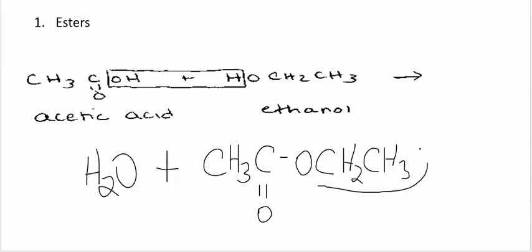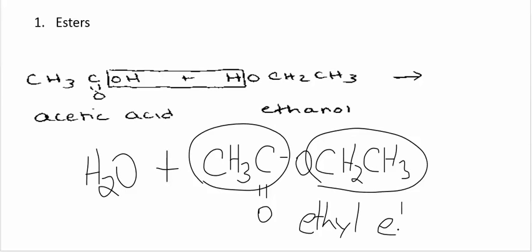And the name of this ester, we're going to name this group first, which is ethyl. Then we're going to name this group eth. And then the suffix is oate. So ethyl ethanoate would be the name of this ester. So the formation of an ester is a condensation reaction.